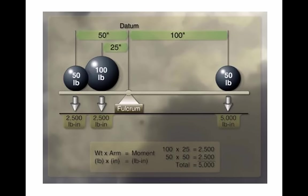The pilot must be knowledgeable about the effect of weight on the performance of the particular aircraft being flown. Pre-flight planning should include a check of performance charts to determine if the aircraft's weight may contribute to hazardous flight operations. Excessive weight reduces safety margins and becomes even more hazardous when combined with other performance-reducing factors. The pilot must also consider the consequences of an overweight aircraft if an emergency arises—if an engine fails on takeoff or airframe ice forms at low altitude, it is usually too late to reduce the aircraft's weight.